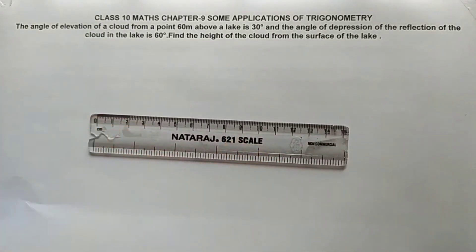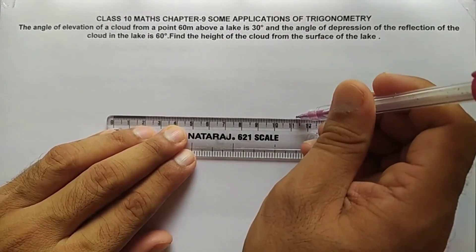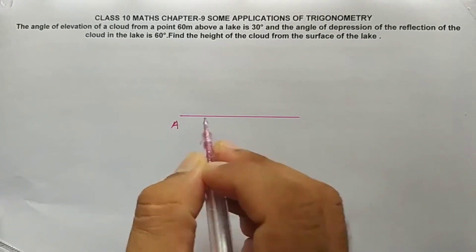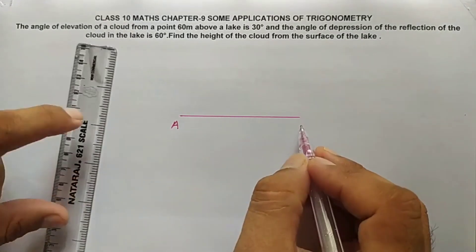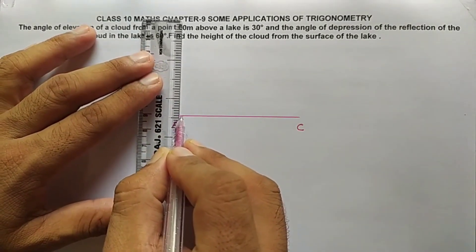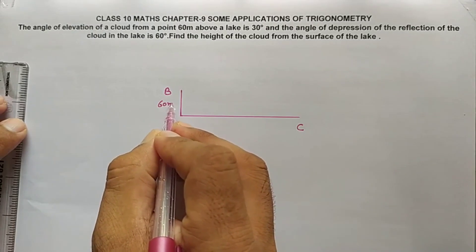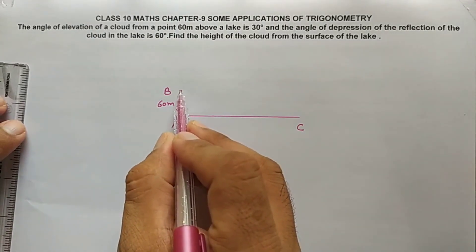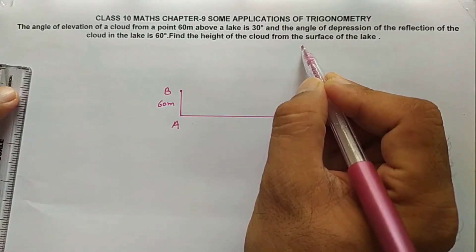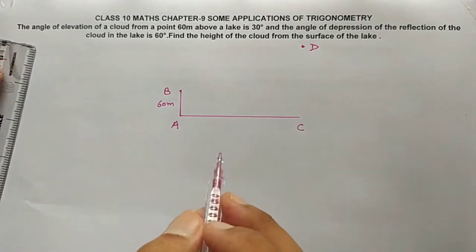One lake is given here — this is the surface of the lake, marked as A. Point C is also on the surface. Point B is 60 meters above the lake, so AB is 60 meters. From this point, one cloud is there, represented by point D.